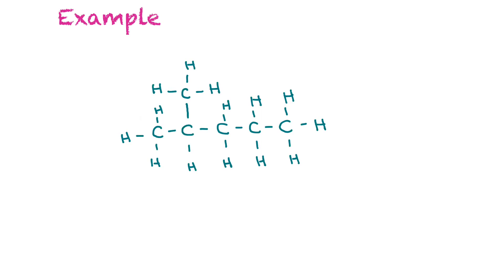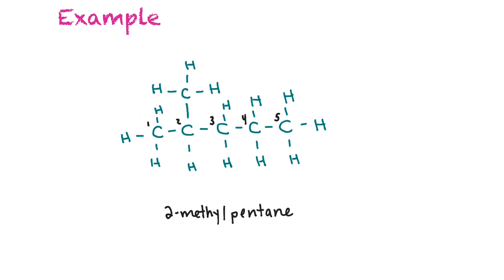For this example: counting the chain either way gives us five carbons, so we number carbon one through five. The branch is on carbon two and has one carbon in it. So the name is 2-methylpentane — 'two' for the position, 'methyl' because it's one carbon, and 'pentane' because the parent chain has five carbons. And that's how you name a branched hydrocarbon.